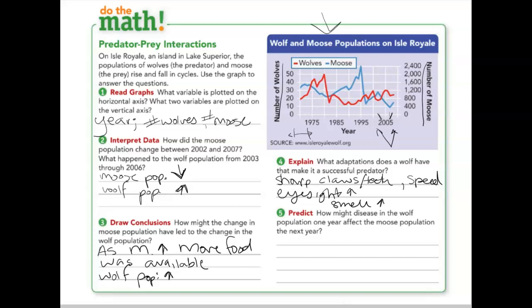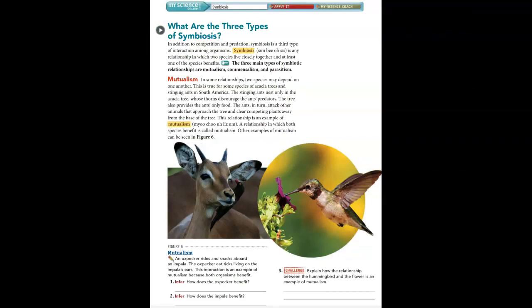If the wolf population went down — say some wolves got sick and died — there would be fewer wolves eating the moose. Because of that, the moose population would increase. With less predation, the moose are thriving.